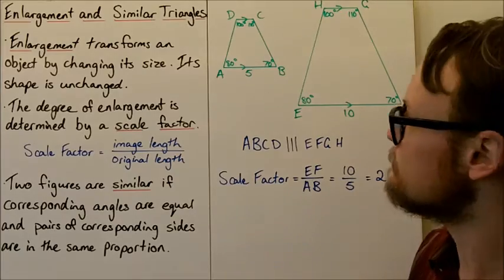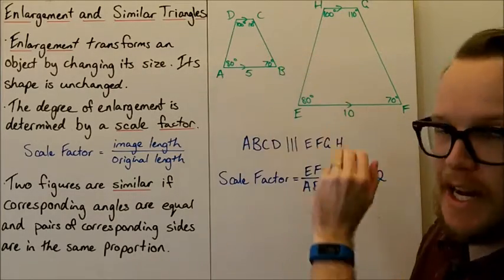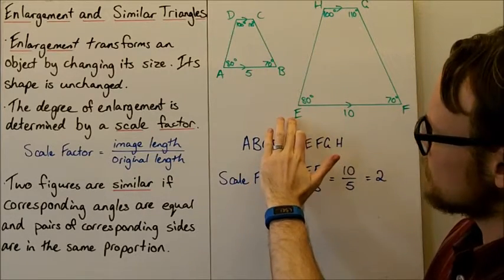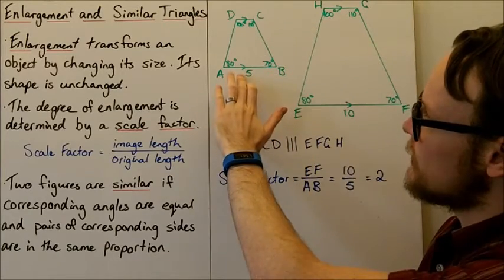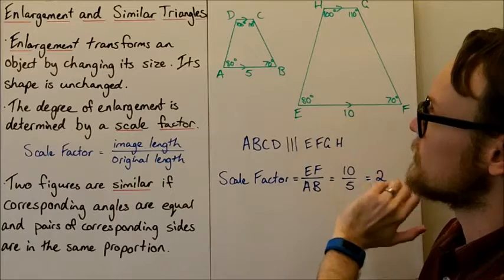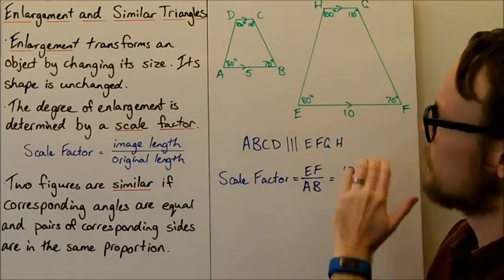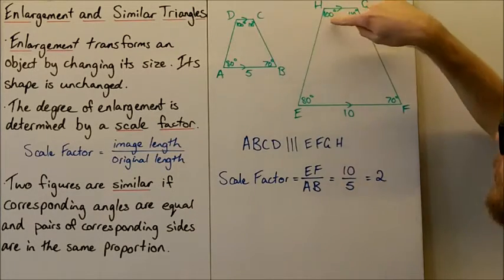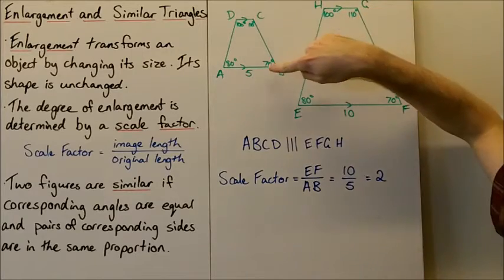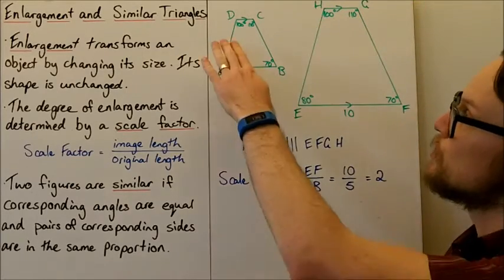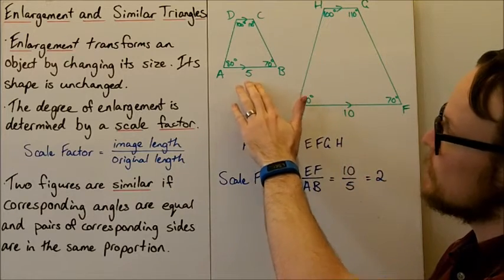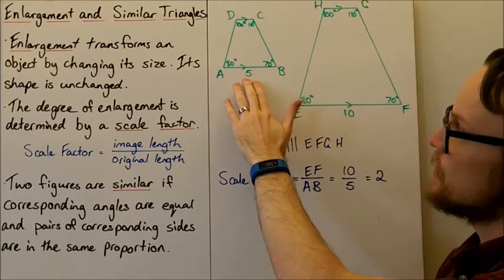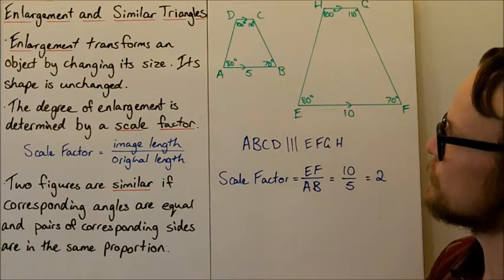If we've got two figures, the figure on the right is an enlarged version of the figure on the left. Our figure on the left is labelled ABCD and our figure on the right is labelled EFGH. We only have one side length labelled — 5 and 10 — and we've got our angles labelled inside. Each corresponding angle is equal: 80, 100, 110, and 70 degrees. They're all the same, and if we look at the side lengths, 5 and 10, they are in proportion.